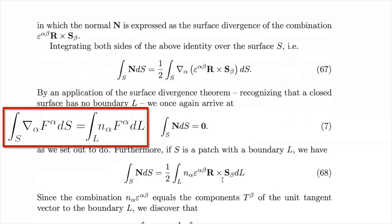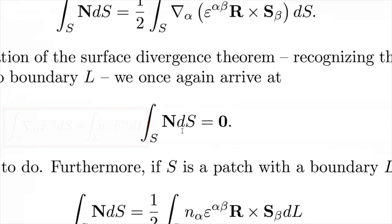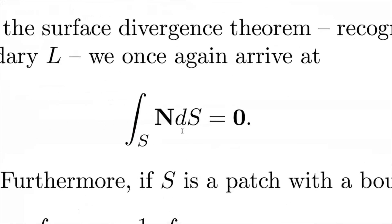And if the surface is closed and therefore has no boundary, there is nothing on the right hand side of the divergence theorem. And so we must conclude that the surface integral of the normal over a closed surface is zero. And this, of course, is an identity that we're already familiar with for closed surfaces.